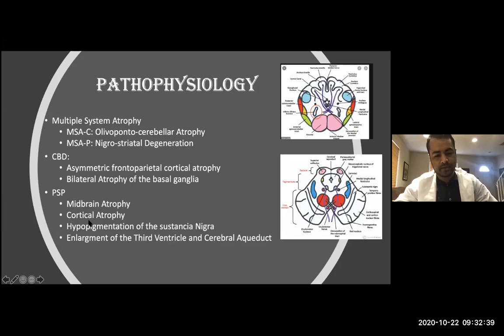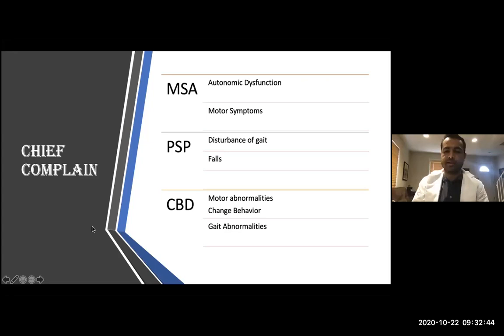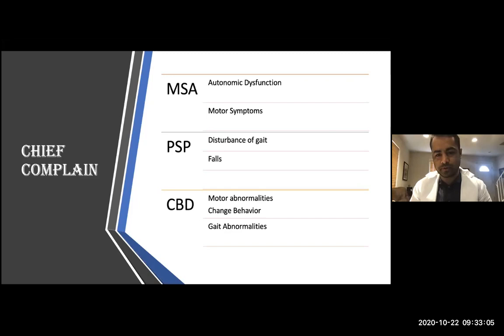The chief complaint that points most clearly to MSA is autonomic dysfunction. If we have to choose the most concerning symptom pointing to MSA, it is autonomic dysfunction — that would include blood pressure dysregulation and erectile dysfunction, which we will discuss more clearly.